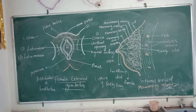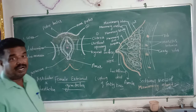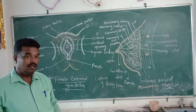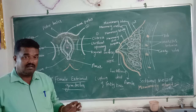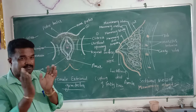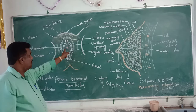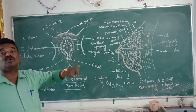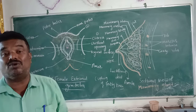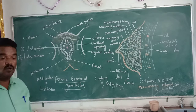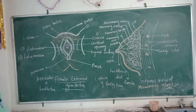The main function of these Bartholin glands or vestibular glands is that they secrete mucus and provide lubrication to the vagina during sexual intercourse or coitus.